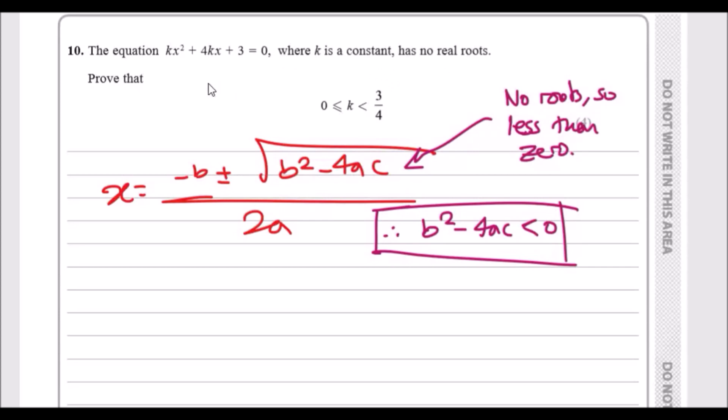This is a discriminant question involving the quadratic equation, but in particular the square root function. When you have no real roots, this means your calculator will give you an undefined answer - if you get negative inside the square root you cannot get an answer.